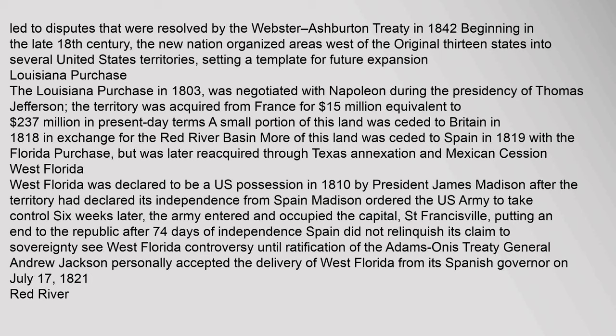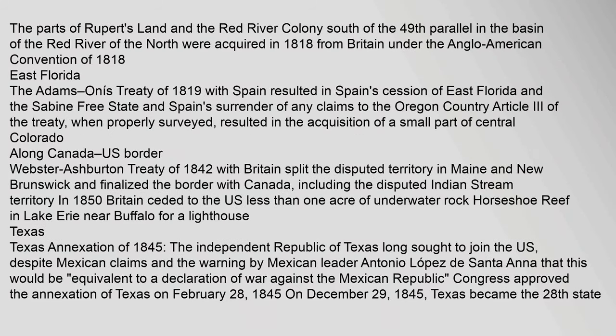The Louisiana Purchase in 1803 was negotiated with Napoleon during the presidency of Thomas Jefferson. The territory was acquired from France for $15 million, equivalent to $237 million today. The parts of Rupert's Land and the Red River Colony south of the 49th parallel were acquired in 1818 from Britain under the Anglo-American Convention of 1818.